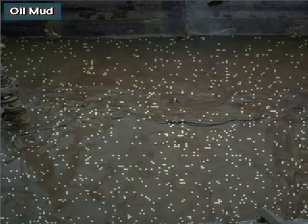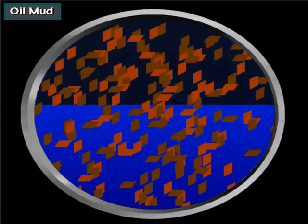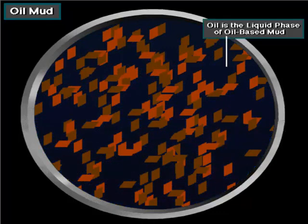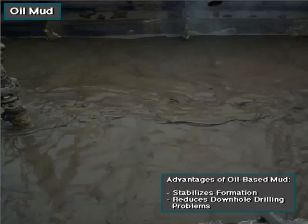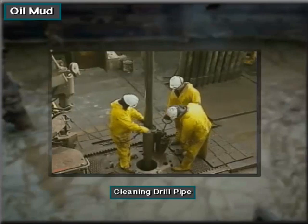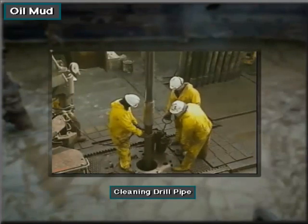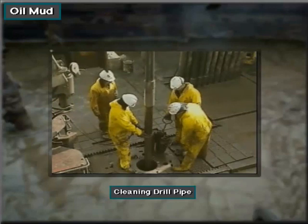At times, downhole drilling conditions require the crew to add oil to the mud, or in some cases crew members use oil instead of water as the base of the mud. This is called oil-based mud. Oil-based mud has many advantages — it can stabilize the formation and reduce downhole drilling problems. However, it is harder for the crew to work with because it can create slippery conditions and environmental precautions must be used.